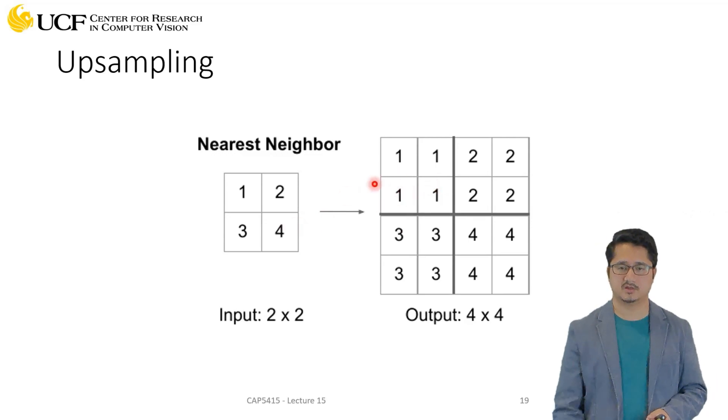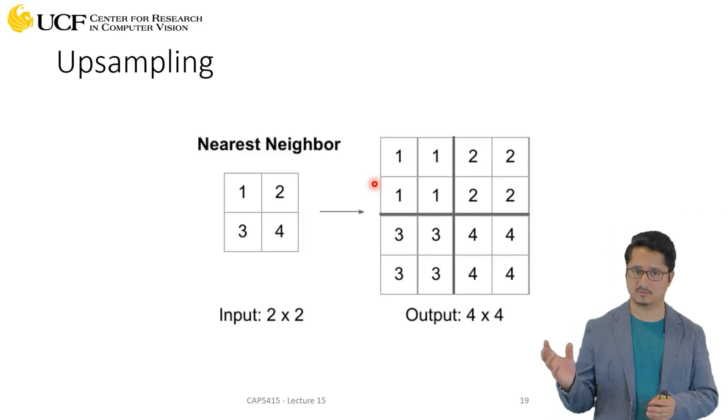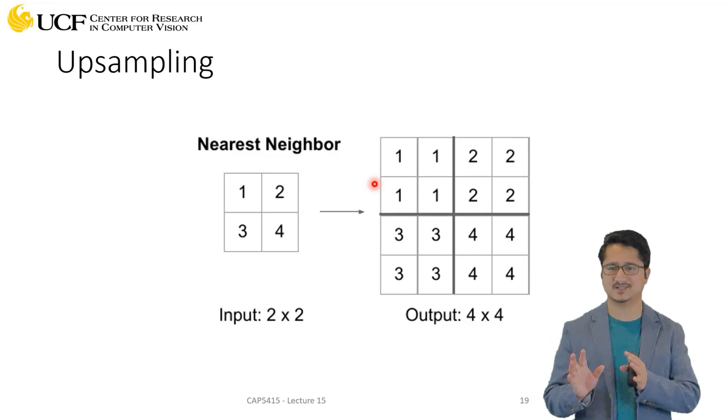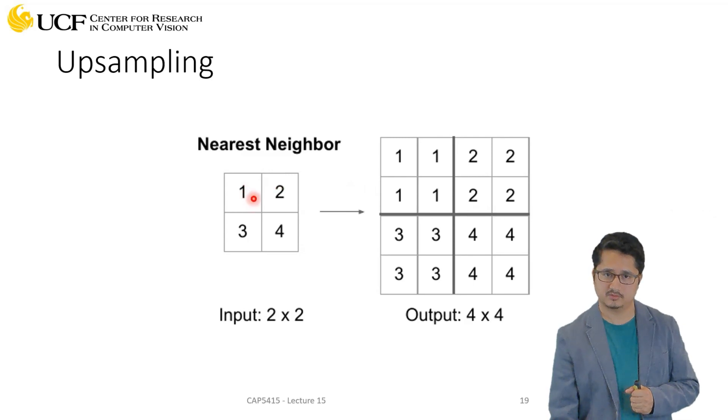Another complex way you can do this is you can actually learn this upsampling. And I'm not saying it will work much better than this nearest neighbor, but that's just one variant. We've seen for some problems it does work well, some problems it doesn't. Let's see what that variant is.